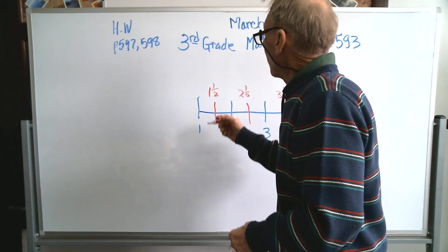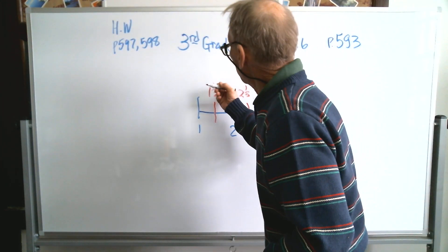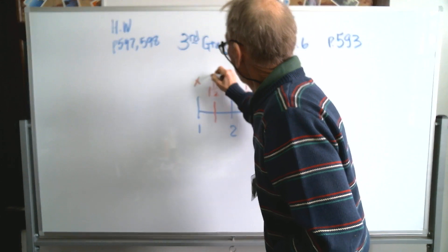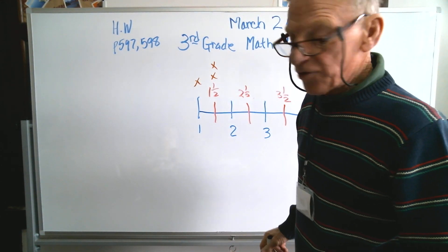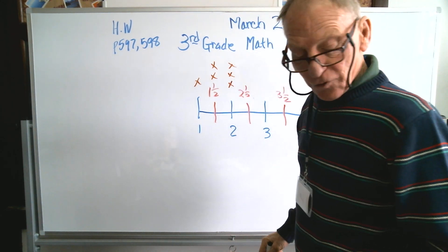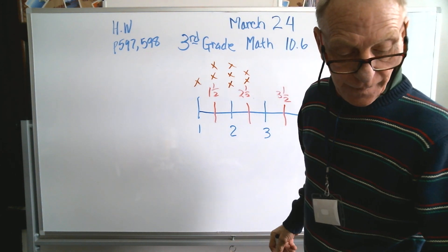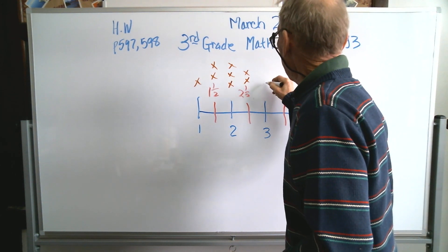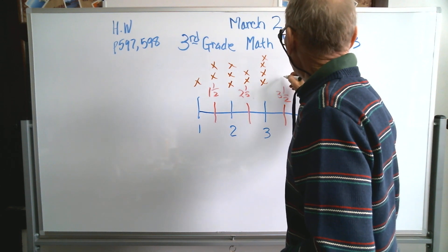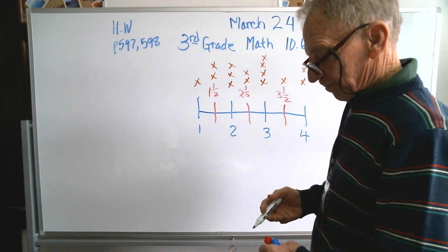Let's see what she's got — we're going to plot it here. According to her plot, she's got 1 at 1 inch, 2 at 1 and 1 half inches, 3 at 2 inches, 2 at 2 and 1 half inches, 4 at 3, 1 at 3 and 1 half, and 2 at 4.